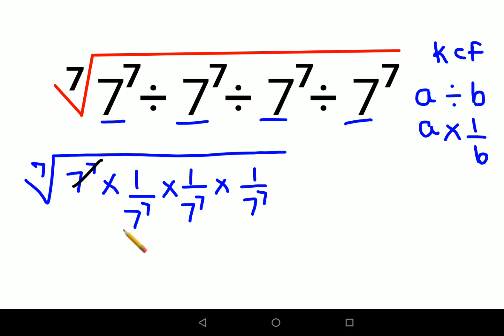If you see, 7 raised to 7 and 7 raised to 7 is canceling, and we are getting 7th root of... Now understand, whenever you have the same base,